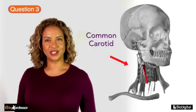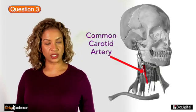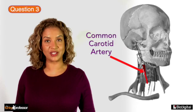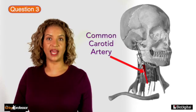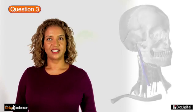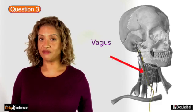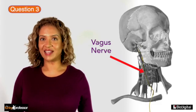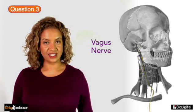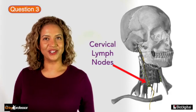The carotid sheath contains the common carotid arteries and its bifurcations into the internal and external carotid arteries. It also contains the internal jugular vein, the vagus nerve, the ansa cervicalis, and cervical lymph nodes.